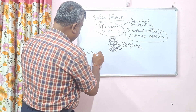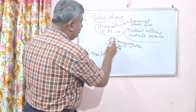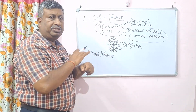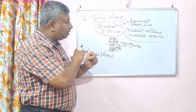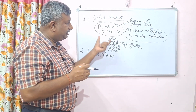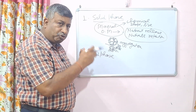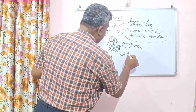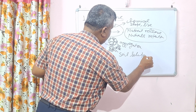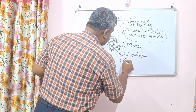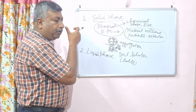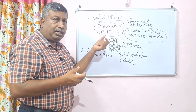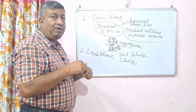The second phase is the liquid phase. Liquid is present in the pore space. The water present in this pore space is called soil solution, and this contains salts that are released from minerals and organic matter. The solid phase provides the nutrients, which are present in the soil solution, and the plant absorbs the nutrients along with the water.